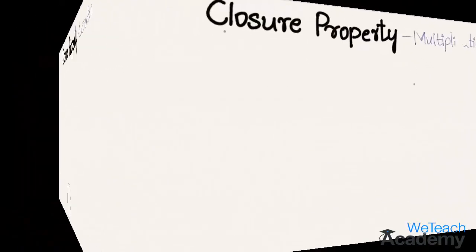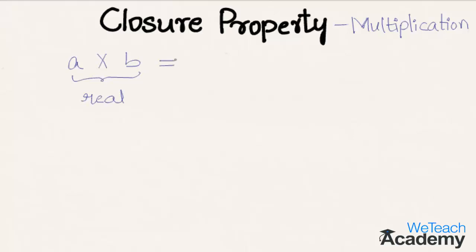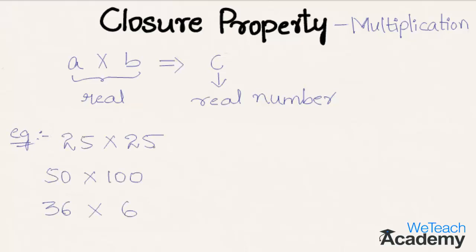Now let us discuss closure property on multiplication. This property states that if two real numbers a and b are multiplied, then their product will equal c, which is also a real number. For example, 25 multiplied by 25 gives 625, which is also a real number.